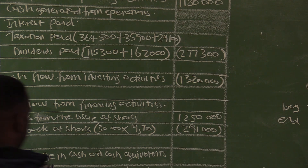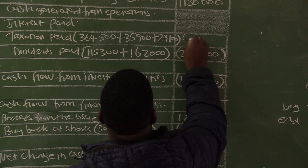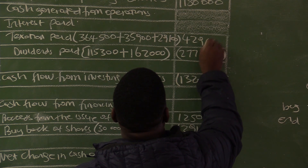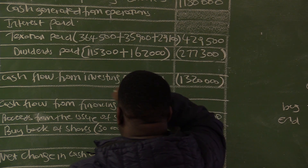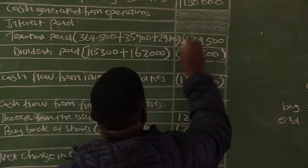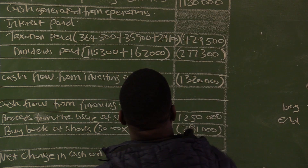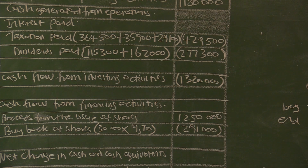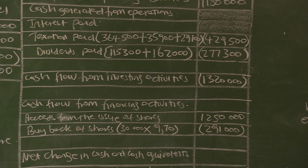Our taxation paid total is $364,500 plus $35,900 plus $29,100 equals $429,500. This is in brackets. Income tax paid is $429,500.